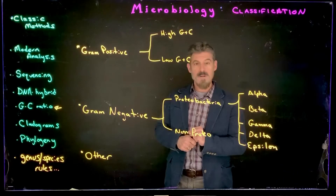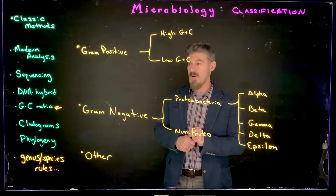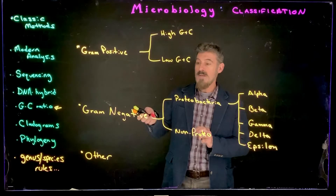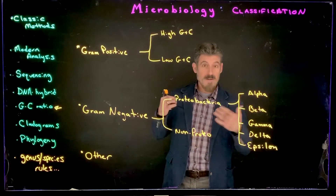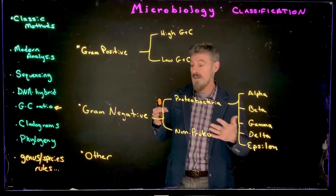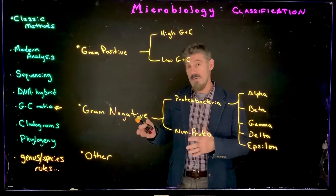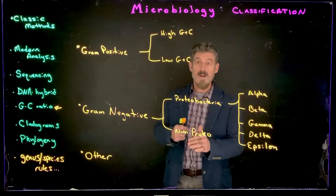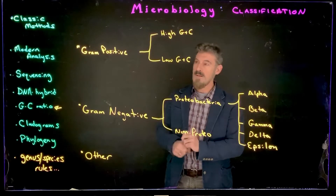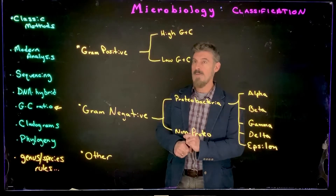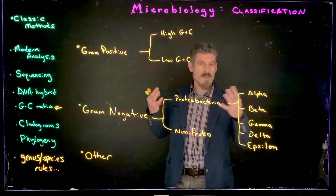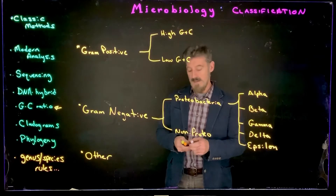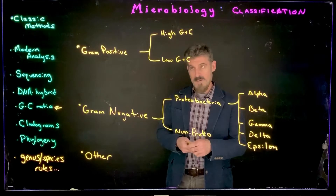Those are some names for some of the groups that get broken down. The gram-positive and gram-negative bacteria are two major categories. There are organisms that don't sometimes fall into either group, which we're mostly leaving off for now. We're just going to focus on these and get into the basics of them.